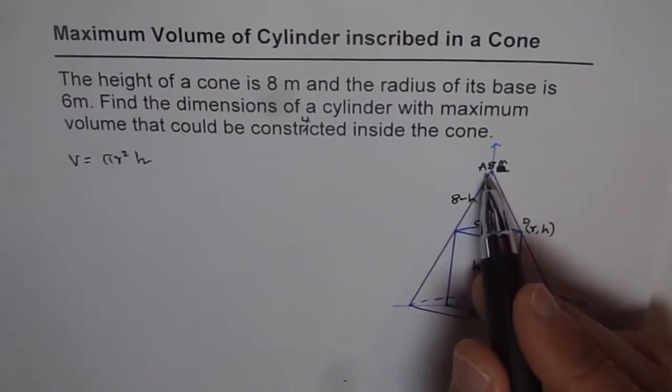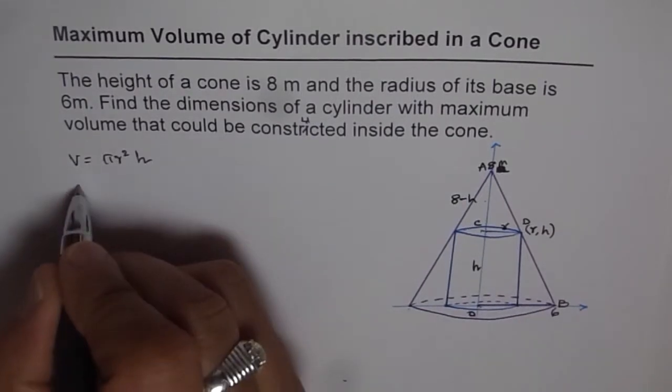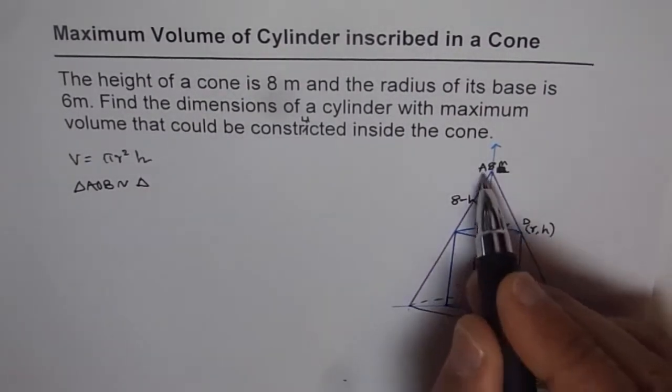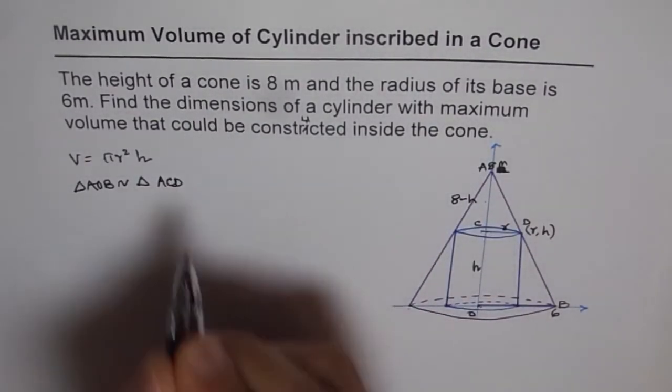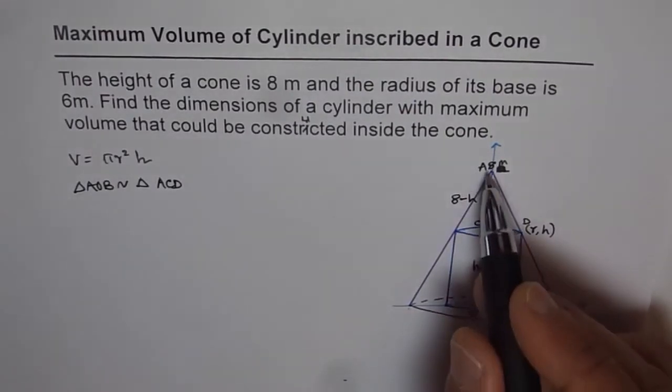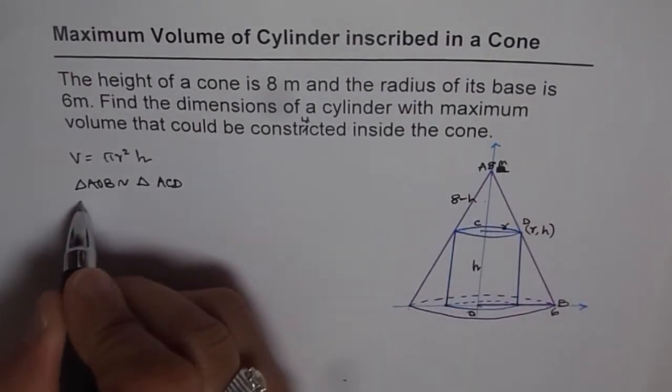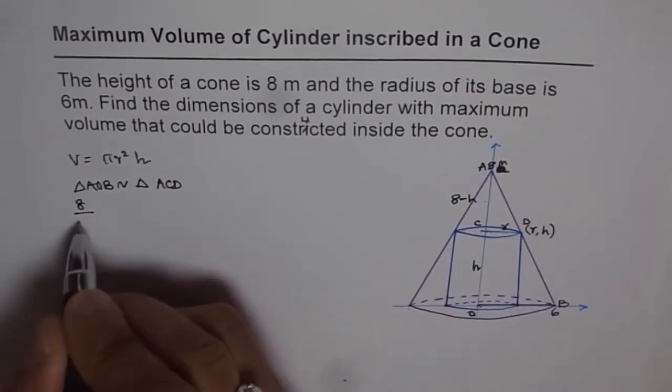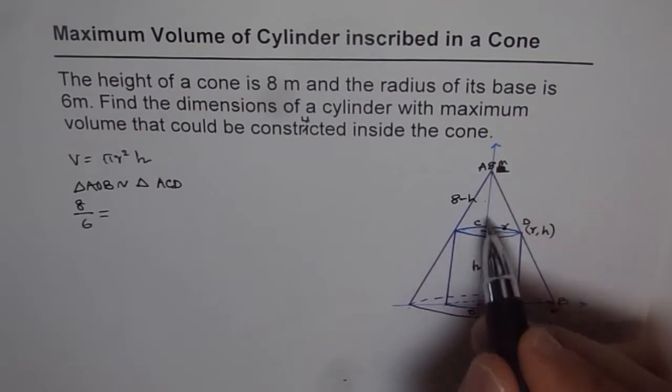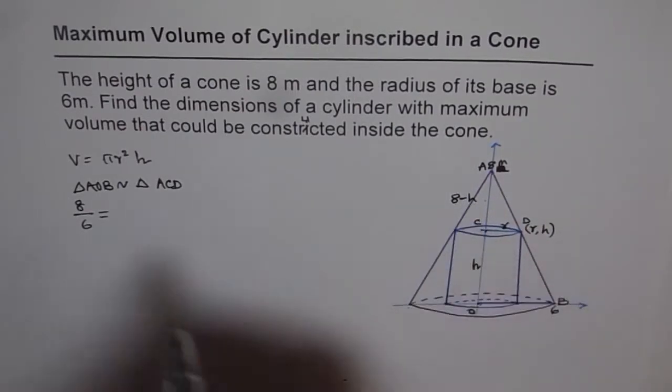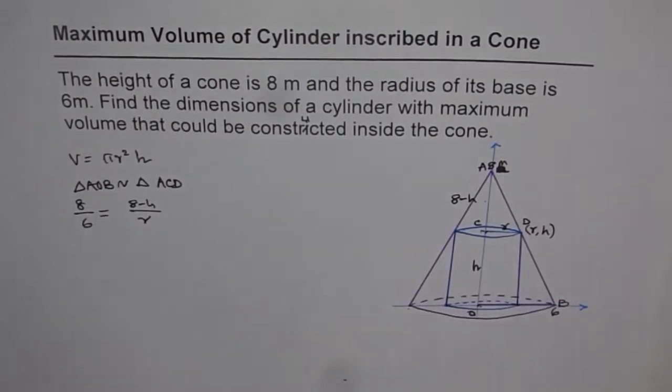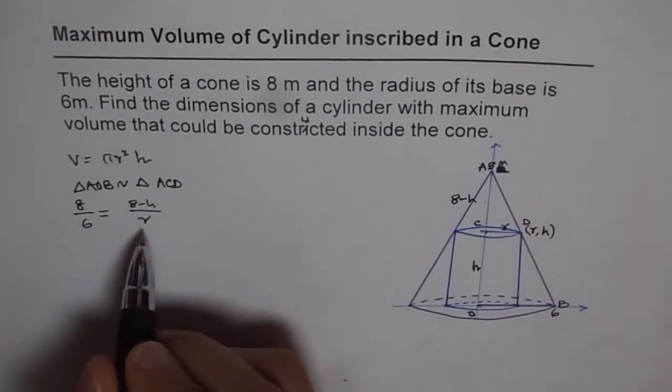Now in the similar triangles, we can write down the ratios. So the big triangle A, O, B, we know triangle A, O, B is similar to triangle A, C, D. Since they are similar, so A, O, which is 8 meters, over O, B, which is 6, should be equal to the height, which is 8 minus h, over r. Now from here, we get relation between r and h.